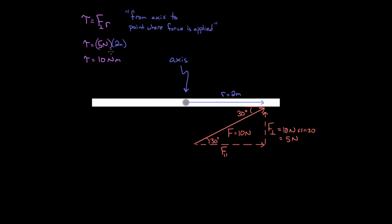At this point, you might be thinking — this is why I hate torque. I have to remember that R is from the axis to the point where the force is applied, and I'm only supposed to take the perpendicular component. Is there an easier formula? Yes — since the perpendicular component equals the total force times sine of the angle between R and F, we can write the formula explicitly as torque equals F times R times sine theta, where F is the total force and sine theta captures the perpendicular component.